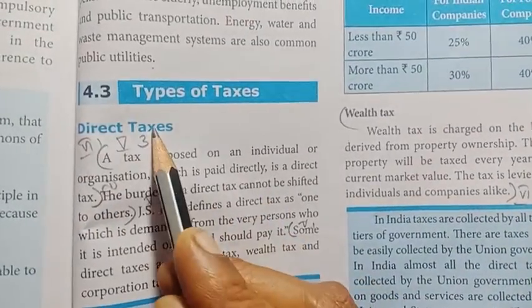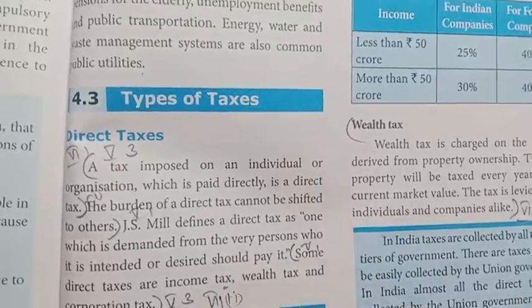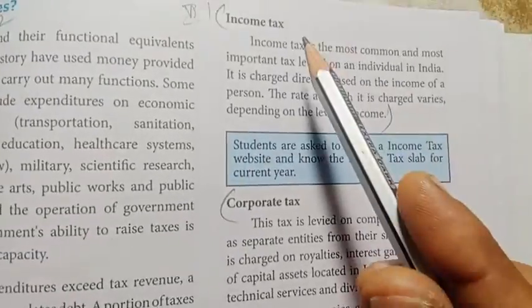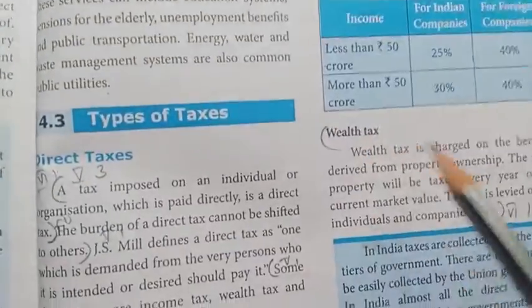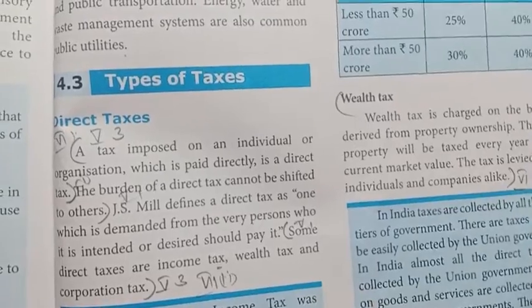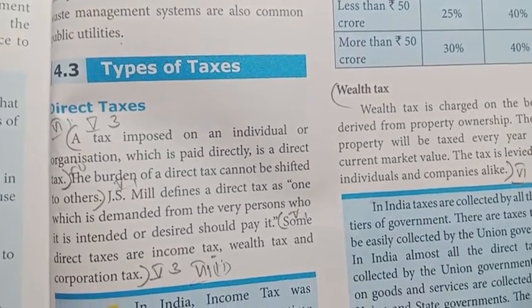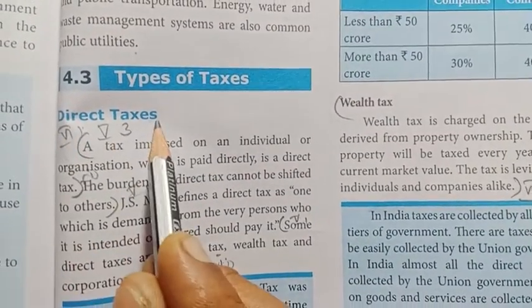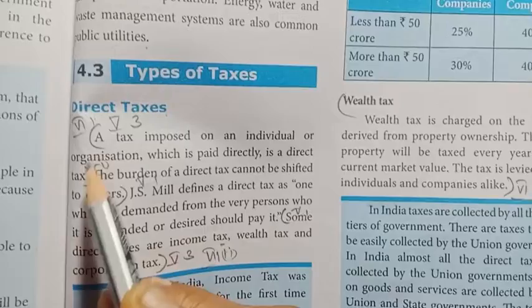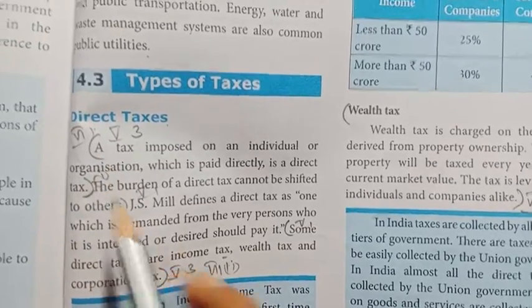Types of taxes: Direct Tax and Indirect Tax. Direct tax examples include Income Tax, Corporate Tax, and Wealth Tax. You can get the definition and write a definition for each.